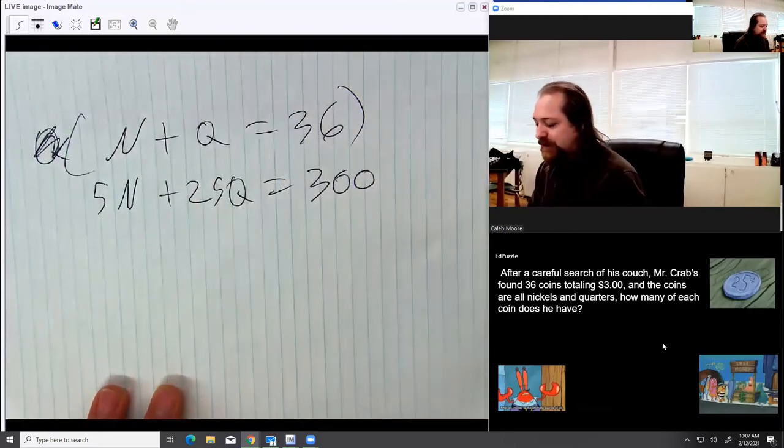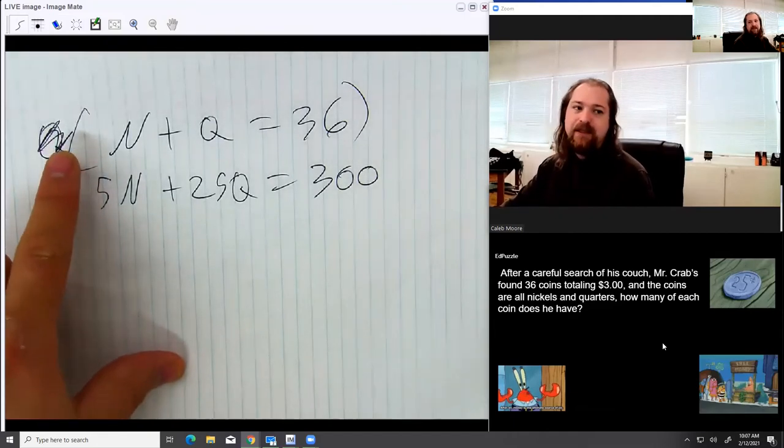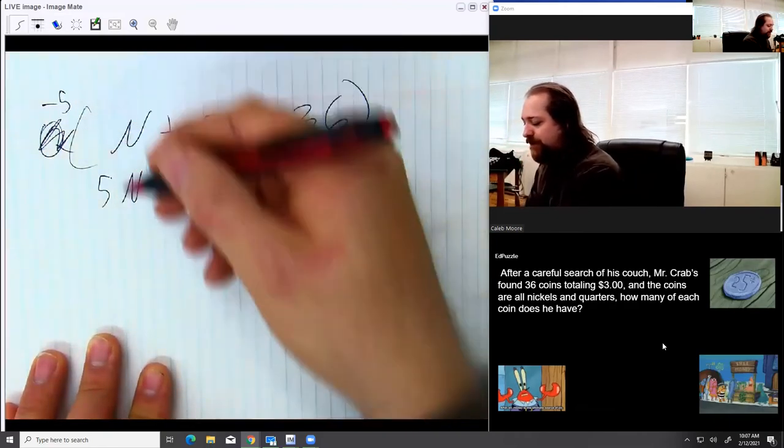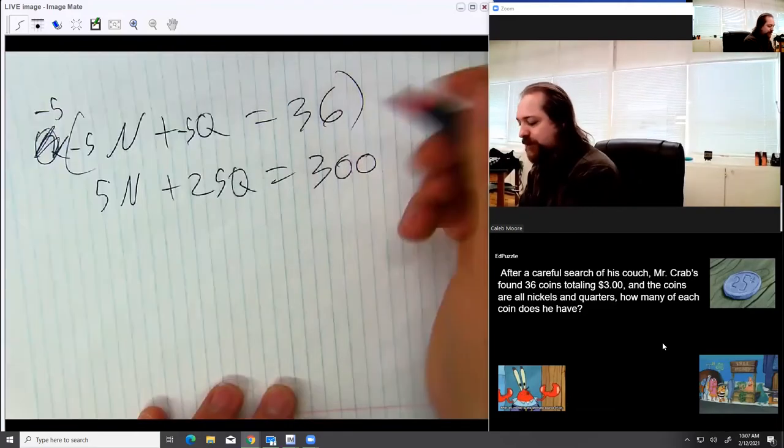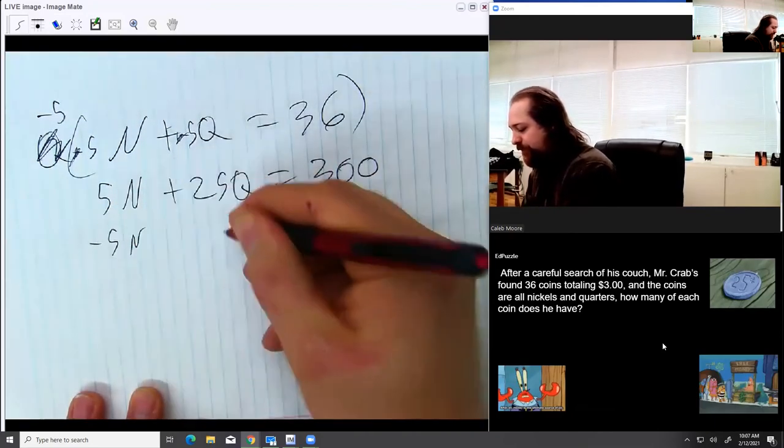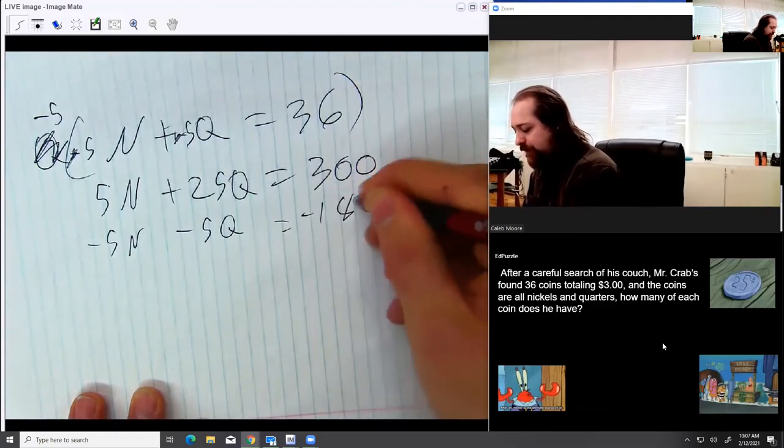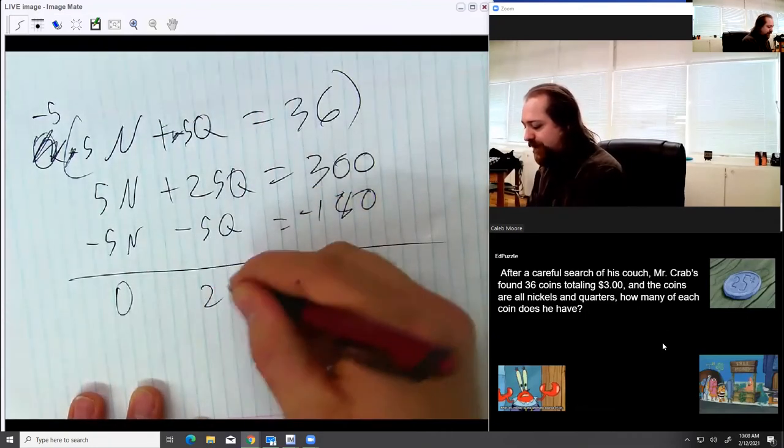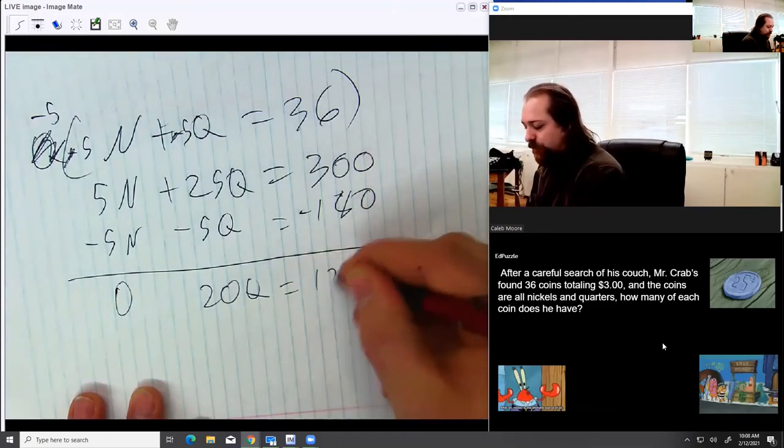So we need to actually change one of these equations to make them match. And I'm going to do that by multiplying the top equation by negative 5. So that's going to give me a negative 5n. That'll cancel those out. Actually, maybe I should write this stuff down underneath. So negative 5n minus 5q equals negative 180. And now I'm prepared to add everything down. 5 minus 5 is 0. 25 minus 5 is 20. And 300 minus 180 is 120.